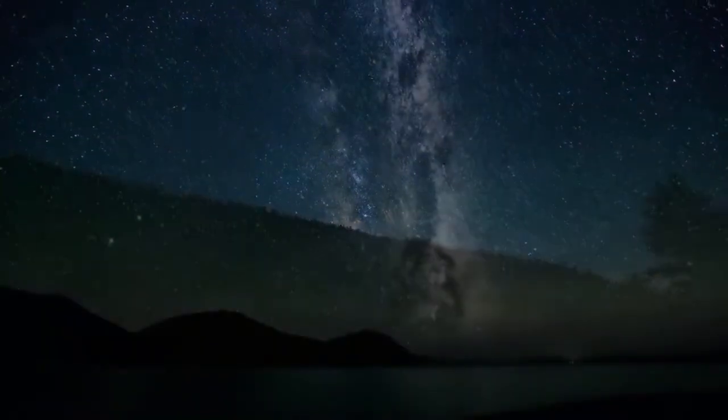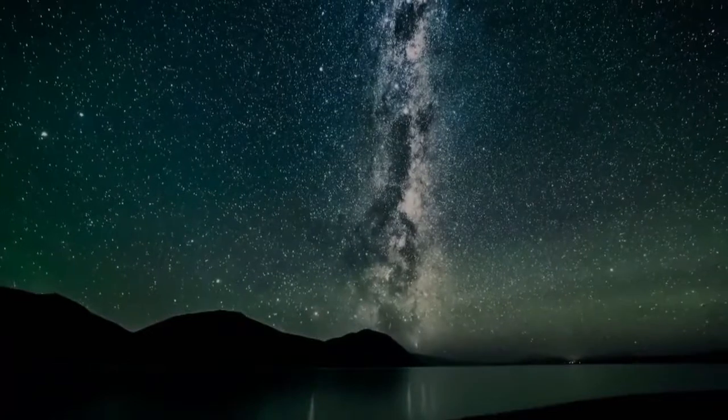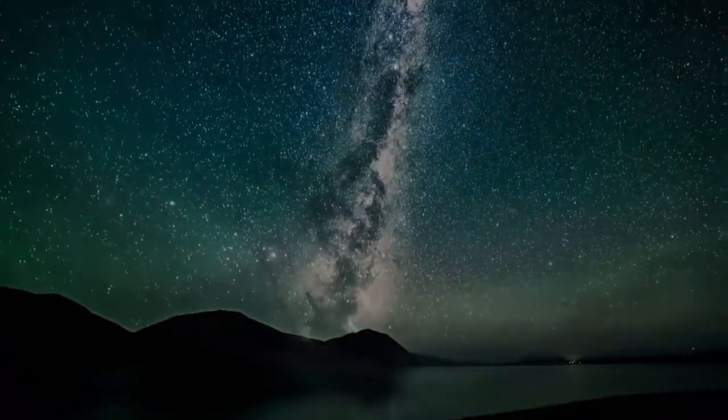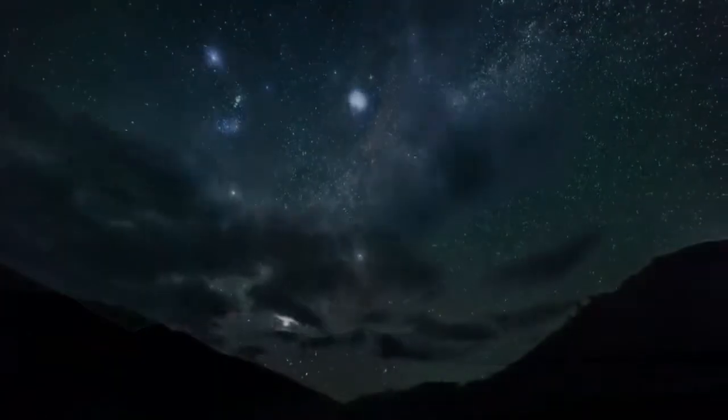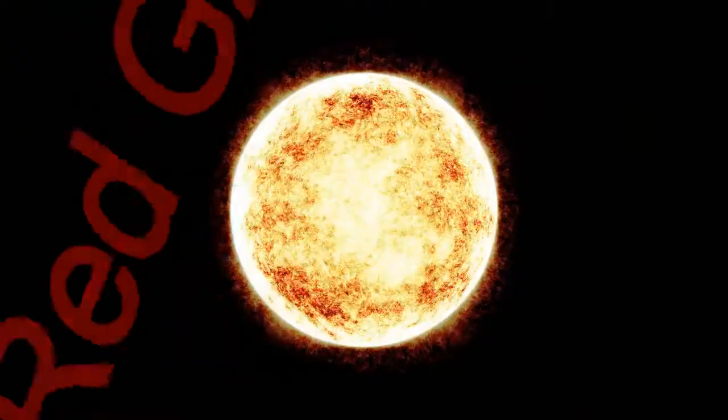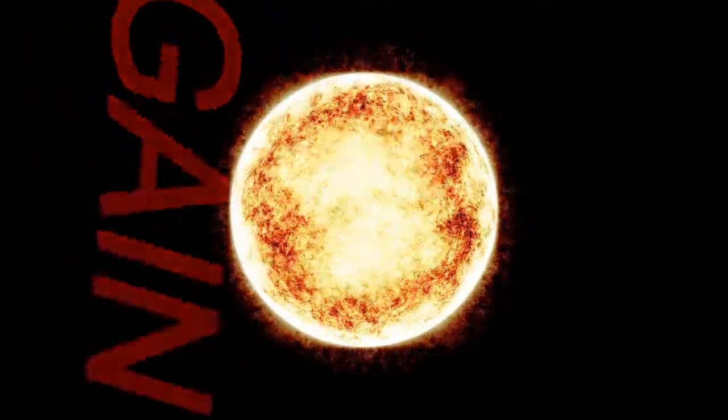they evolve into red giants that have comparatively cool surfaces. Red giants have diameters between 10 and 100 times that of the sun. They are bright because they are so large, although surface temperature ranges between 2,000 to 3,000 degrees Celsius.